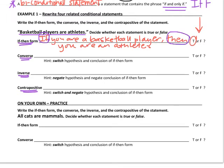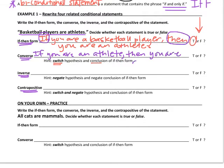The next thing to do is write the converse statement. When we write a converse, we take the hypothesis and make it the conclusion, and take the conclusion and make it the hypothesis — we switch the two of them. So the converse is: if you are an athlete, then you are a basketball player. Is that true or false? If you're an athlete, do you have to be a basketball player? No, so the answer is false.